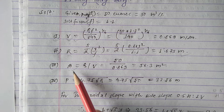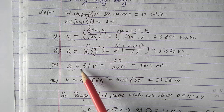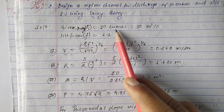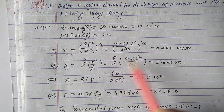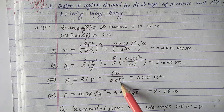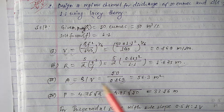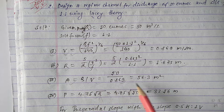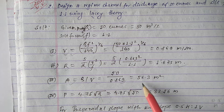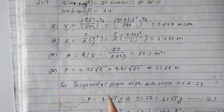Step 3 — find area A = Q/V. Discharge Q = 50 m³/s and V = 0.869 m/s, so A = 50/0.869, giving A = 56.3 m².